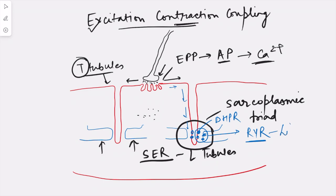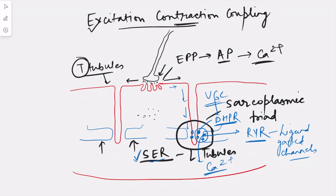RYR channels are ligand-gated channels, while DHPR are voltage-gated channels. These voltage-gated DHPR channels interact with RYR and cause the opening of the ryanodine receptors, resulting in the release of calcium from the smooth endoplasmic reticulum into the sarcoplasm. The smooth endoplasmic reticulum is a huge storehouse of calcium. In skeletal muscle, it is specifically a physical interaction between DHPR on the T-tubules and RYR on the L-tubules that is responsible for calcium release.